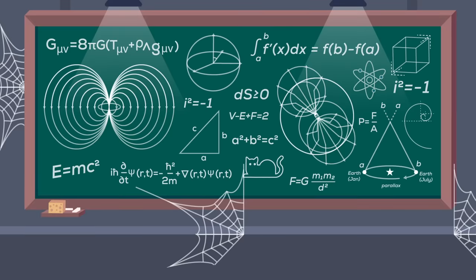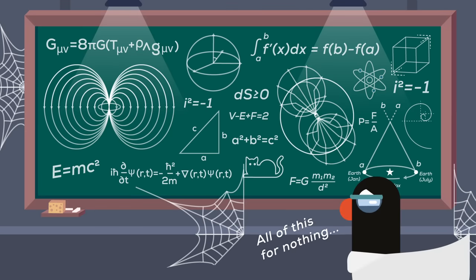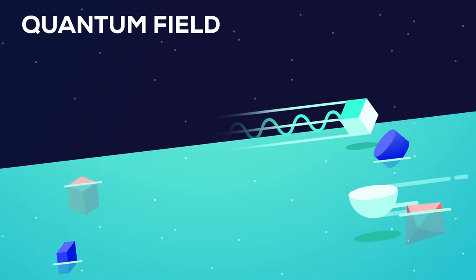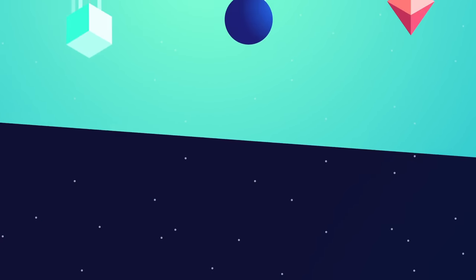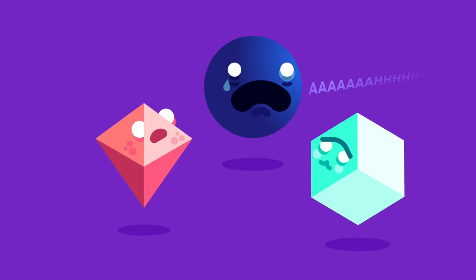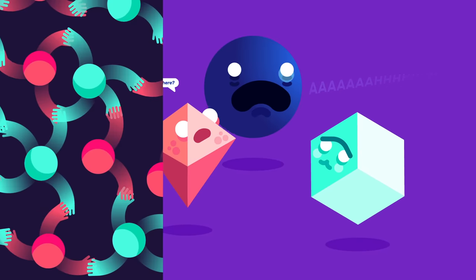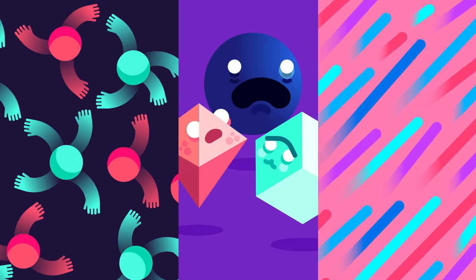If the energy level of the Higgs field changes, it changes all of physics. In the true vacuum of the sphere, the standard model will be overthrown, superseded by different physics that we don't know. How fundamental particles behave. How atoms hold together. How chemicals react.